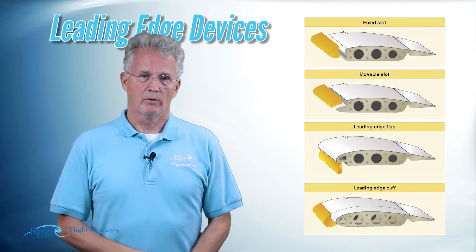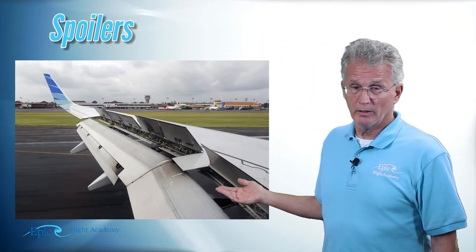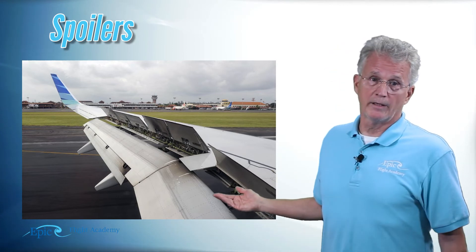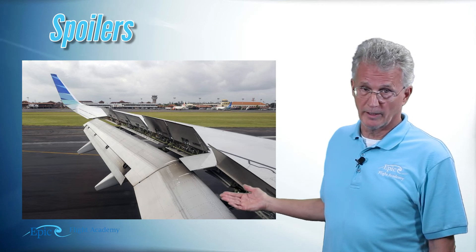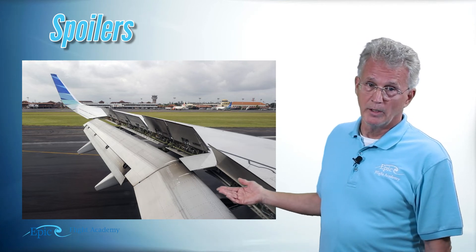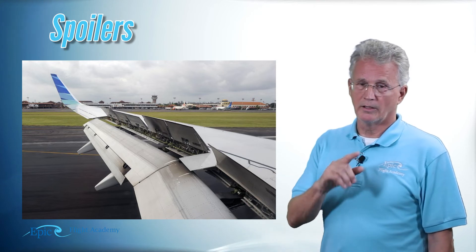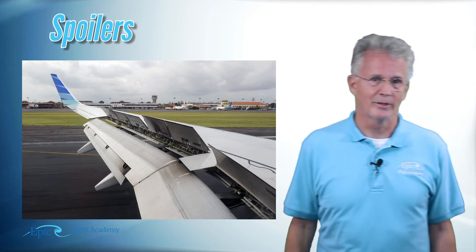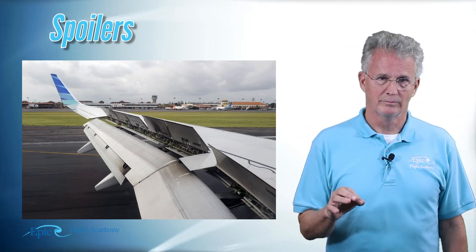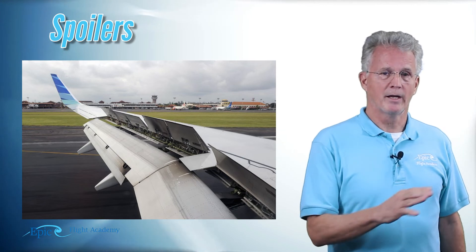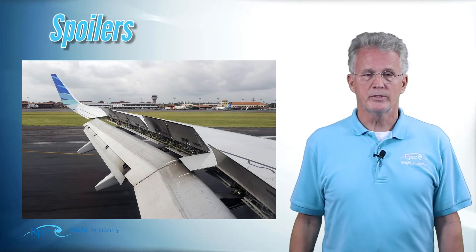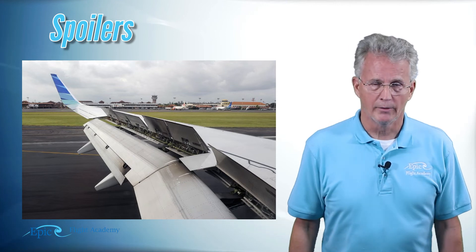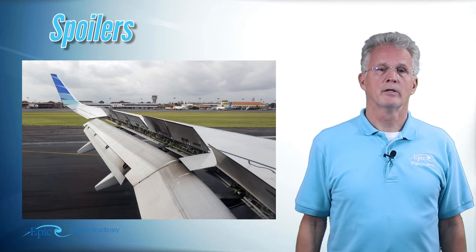The fourth secondary flight control is the spoiler. Spoilers are not found on a Cessna 172 — they're found on high-speed aircraft, typically jets. In this diagram you can see the spoilers raised on the left wing. Spoilers do exactly what they say: they spoil the lift created by that wing. These secondary flight controls are also used on the ground to help the aircraft slow down.